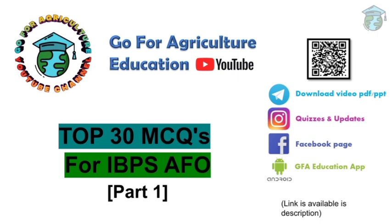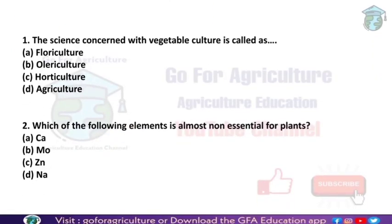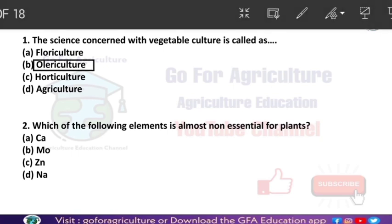Let's start the first question: the science concerned with vegetable culture is olericulture. Olericulture is a science concerned with vegetable culture. Floriculture is a science related to the culturing of different kinds of flowers. Horticulture is a huge branch that includes many sciences like floriculture and horticulture. Agriculture is related to the growing of food crops.